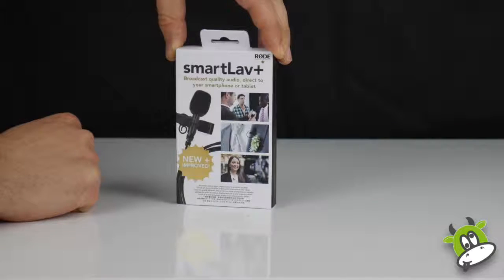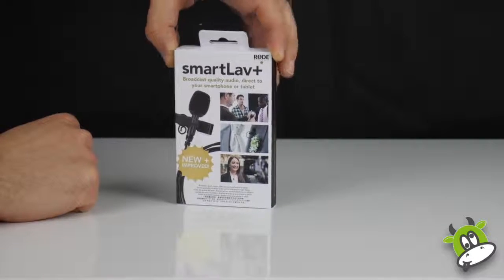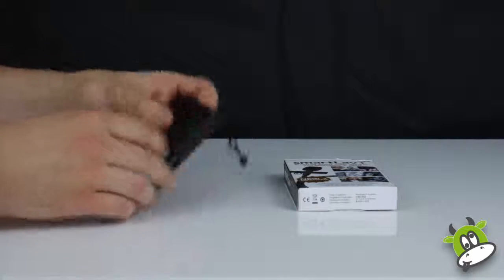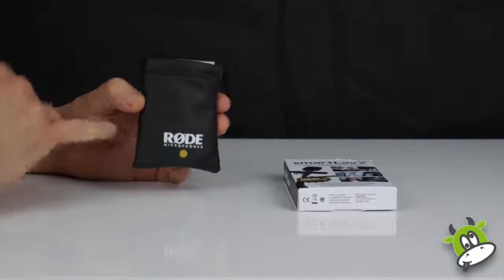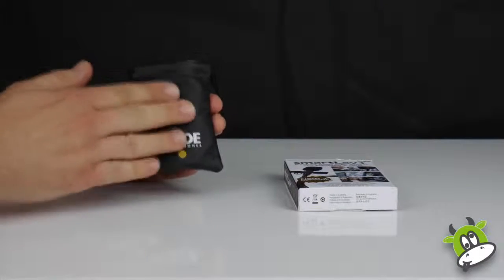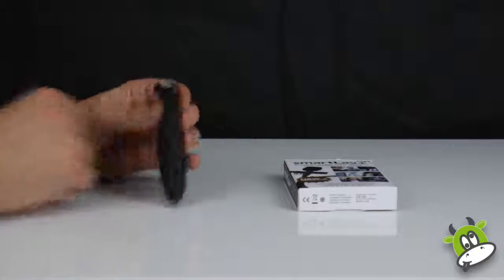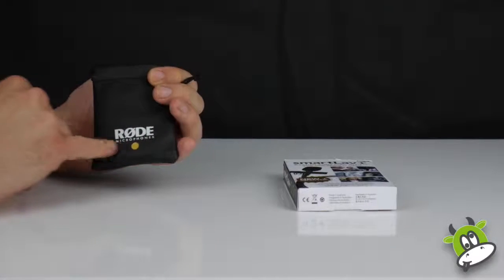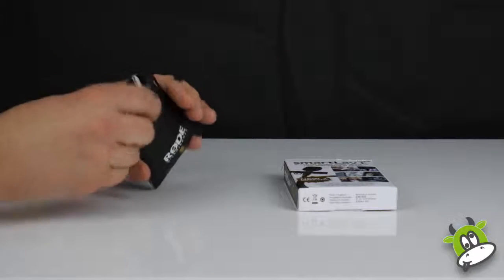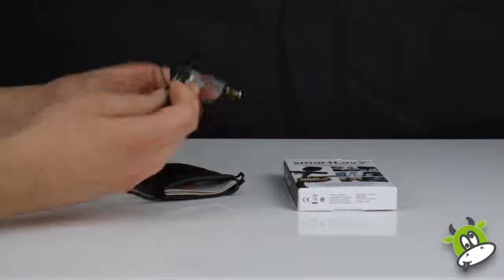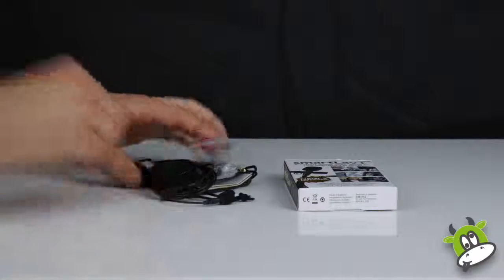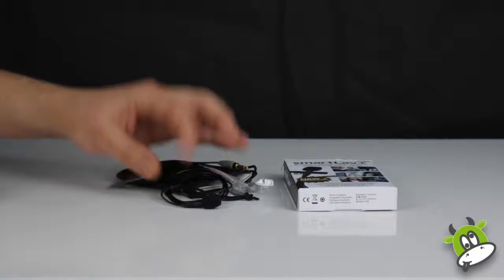So let's unbox this and see what we get inside. So you get a nice little plastic fabric case just there, Rode microphones, and inside here is the main unit.